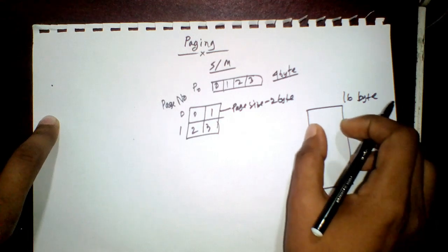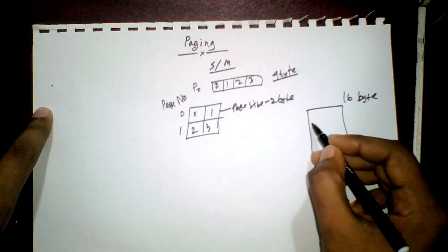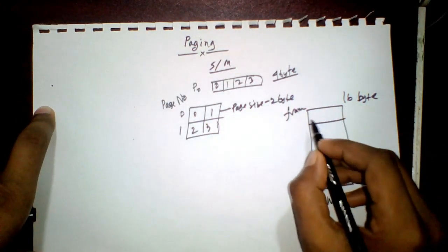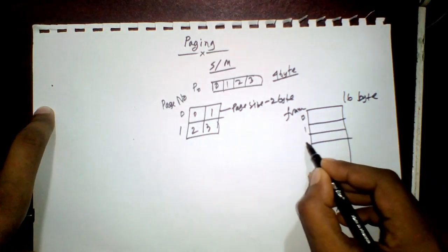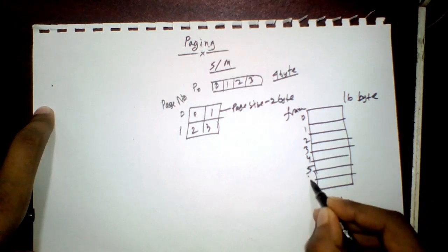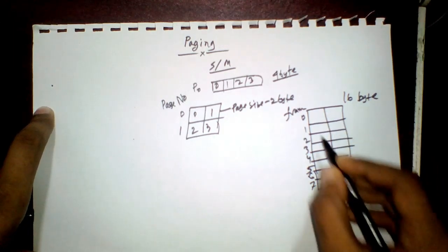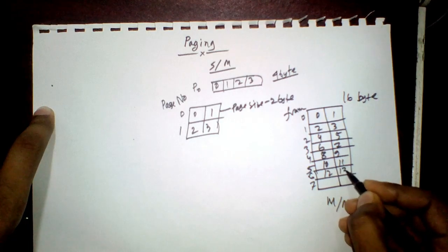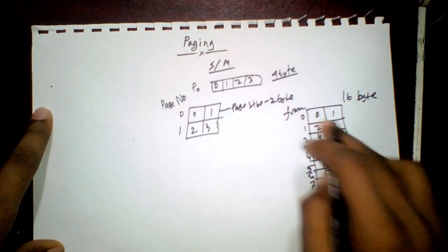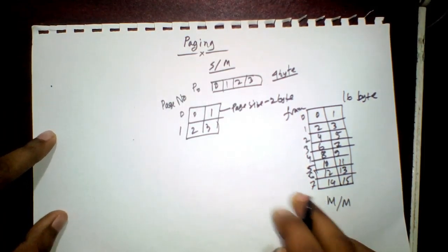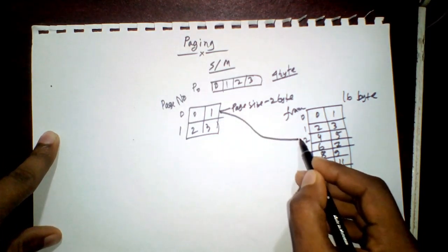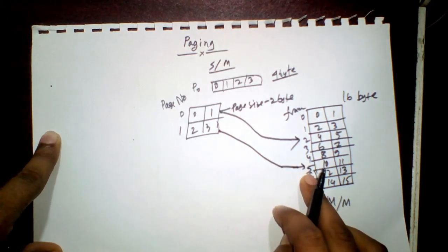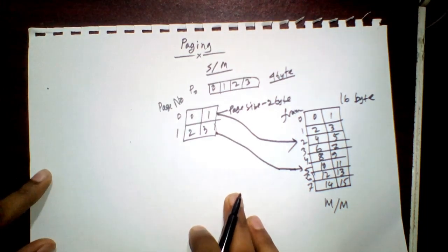Now I need same-size blocks in memory — these are called frames. I will divide the 16-byte main memory into equal-size frames of two bytes each, giving me eight frames: zero through seven. The memory addresses go from zero to fifteen. I would like to store page zero in frame two and page one in frame five. This is the reason we use paging, and our page size and frame size must be equal.